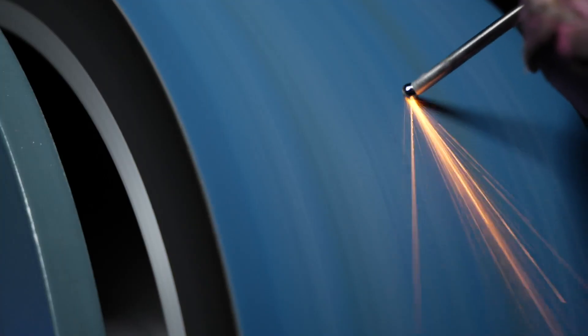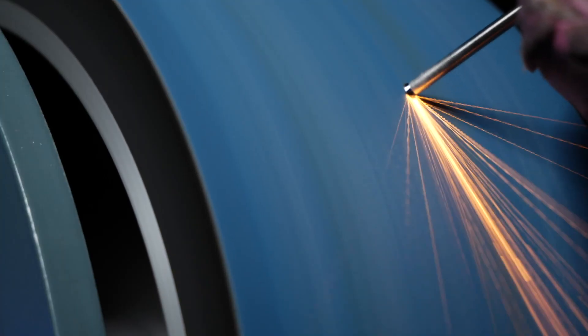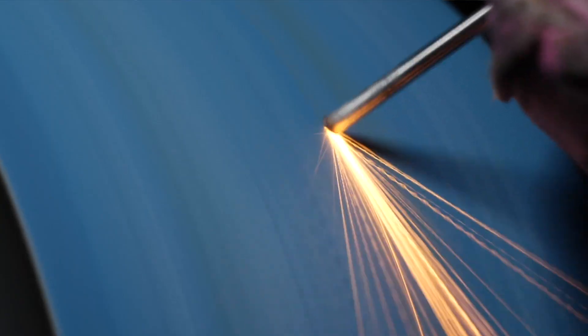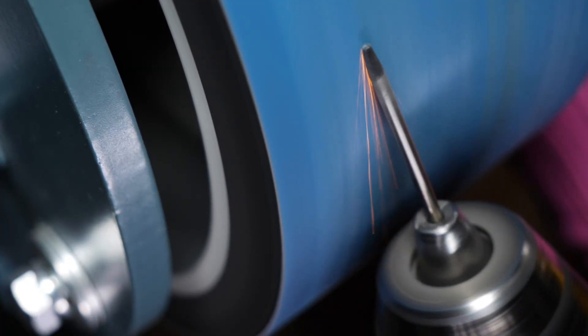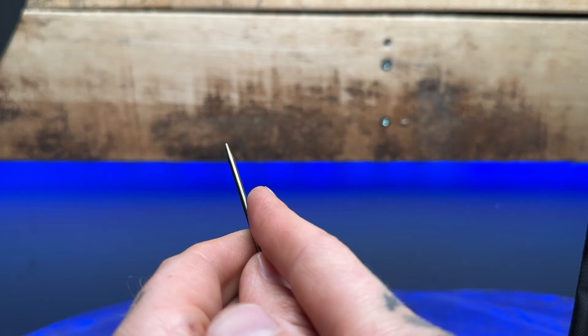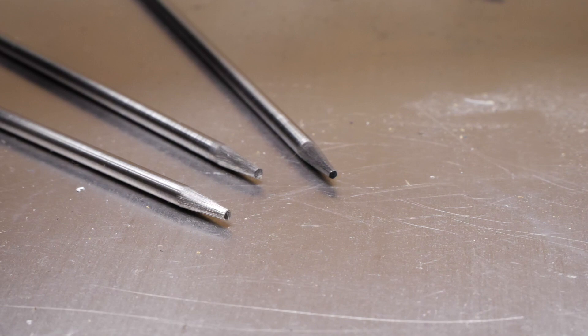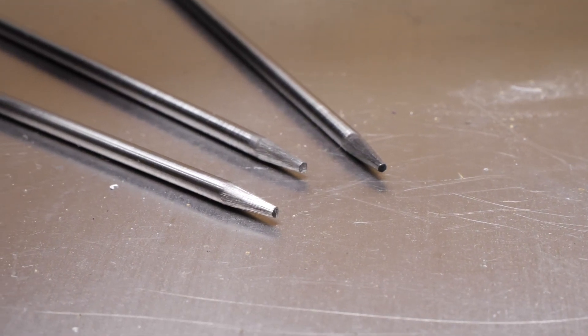First thing I recommend doing is buzzing about the first couple millimeters or about one eighth of an inch off the tip of your tungsten. Now after you buzz the end of the tungsten off and remove any contamination or cracks on the end of it, what I'm going to do next is actually grind back a bit of a taper on the tungsten. We're going to do this lengthwise like you see here and after grinding it, I will be able to see clearly if there is any cracks or blemishes left over.